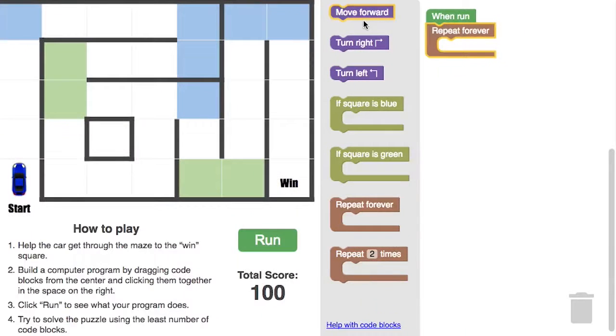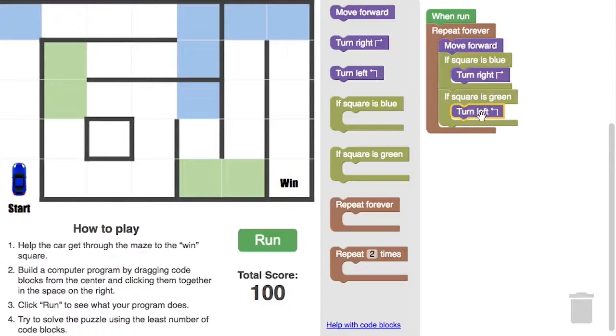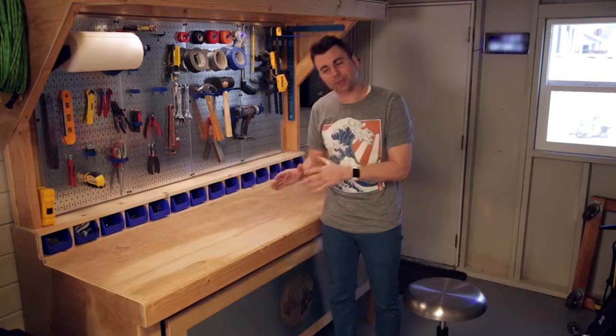As a refresher, your goal is to get this blue car to the finish line by building a simple computer program using these coding blocks. When you thought you had good code, you would hit the run button to see if the car makes it all the way to the end using your commands. But here's what you couldn't have known.